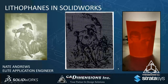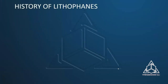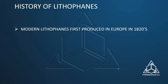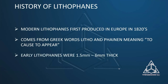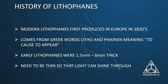A quick history lesson: modern lithophanes were produced in Europe - in France, I believe - in the 1820s, though you can find ancient types of lithophanes from way back as well. The name comes from the Greek words litho and phanon, which means 'to cause to appear.' Early lithophanes ranged from one and a half millimeters to six millimeters thick, and they need to be thin so the light can shine through.